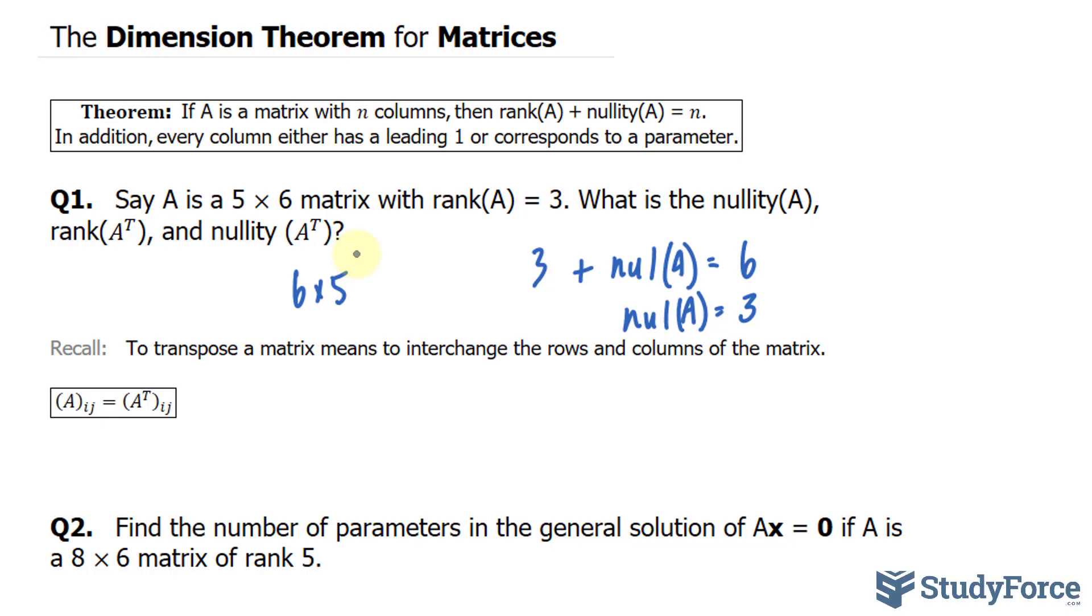There's a theorem that states that the rank of a matrix is equal to the rank of its transpose. The reason for that is because the row space of a transpose of a matrix is just the column space of that matrix, which has the same dimension as the row space of that matrix. So the rank of A is equal to the rank of A transpose, which equals 3.